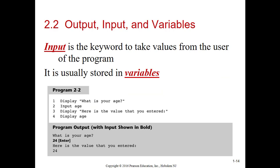The input is a keyword to take values from the user. That value you're going to get from the user when they type it in and hit enter, you're going to store it in a variable that's already in memory because you're going to have it create that. In this example, the user's going to see what is your age. They're going to enter in the age, and then they're going to see here's the value that you entered, and then you're going to see the age.